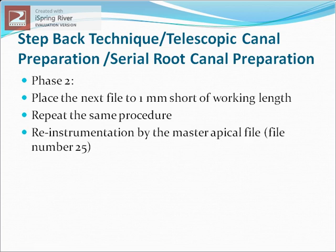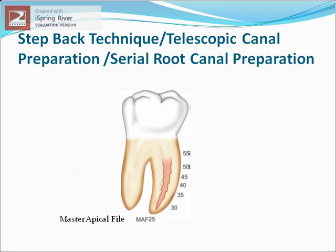Finally, re-instrumentation of the root canal is done with the master apical file — size 25 — using a push-pull motion to achieve a smooth, tapered form. As illustrated, the master apical file is inserted to full working length, size 30 is inserted about one millimeter shorter, size 35 about two millimeters shorter than the full working length, and so on.